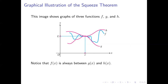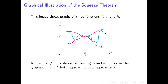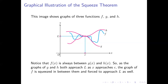The first thing to note is that the graph of f is always between the graphs of g and h — it never goes above or below either one. Notice we've got the point where x equals c labeled on the x-axis, and as the graphs of g and h get closer and closer to x equals c, they come together at the same point where y equals L. Because the graph of f is always in between g and h, it's forced — squeezed — to get closer and closer to L as well.